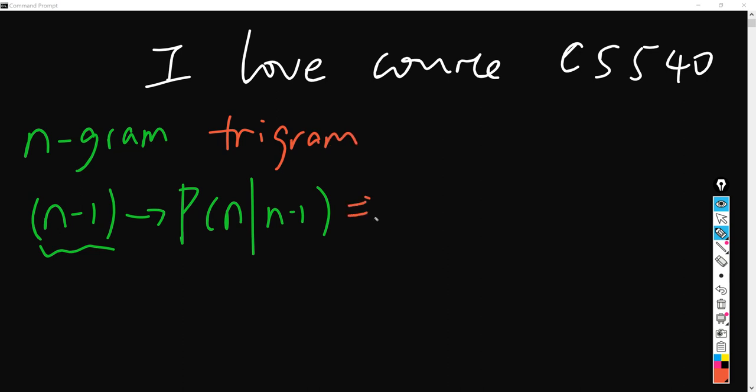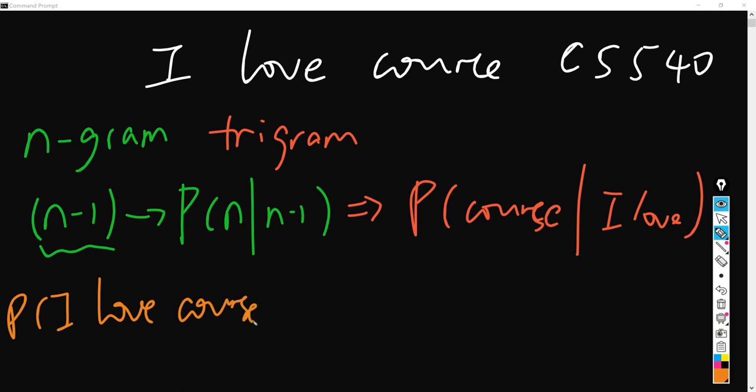For example, I got a sentence, I love course CS540. So actually I can do something. I can ask to calculate the course by providing I love. So it's telling you that if I give you, stored in this trigram database, always three words together. So if I tell you the first is I love, what is that third word vocabulary? And to calculate the possibility the third word is course, but given the condition the first two is I love.